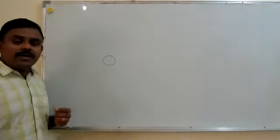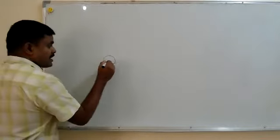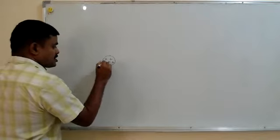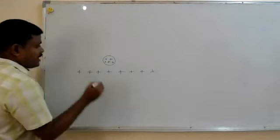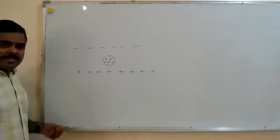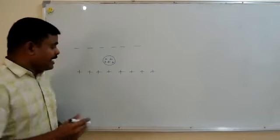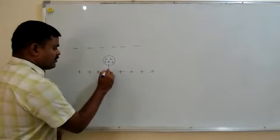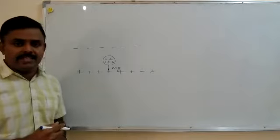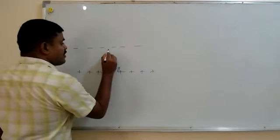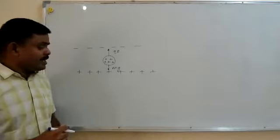We are going to see how an oil drop can be held stationary in space. The oil drop is given positive charges. There is a positive plate at the bottom and a negative plate at the top, and together they create an electric field. As the oil drop tries to fall down because of gravity, it is repelled by the electric field in the upward direction. The electric force is q times E.